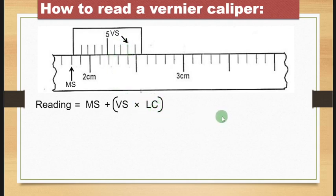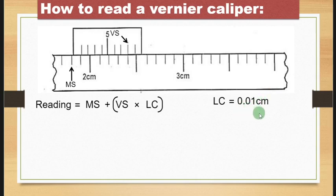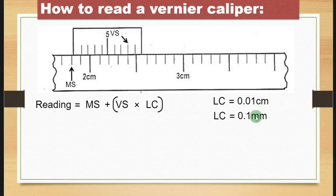The least count (LC) is the smallest unit that a particular instrument can measure. For the Vernier caliper, the least count in centimeters is 0.01 cm. So the caliper can measure accurately up to 0.01 cm. If the Vernier caliper is in millimeters, then the least count would be 0.1 mm.